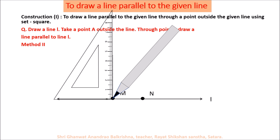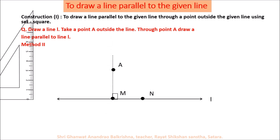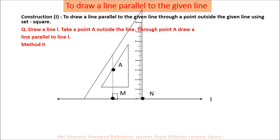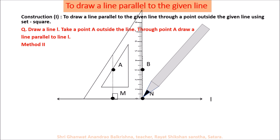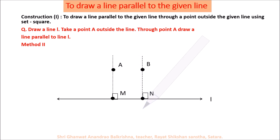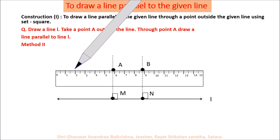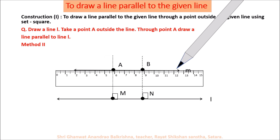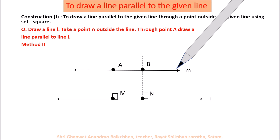We have drawn a perpendicular to line L through point M. Now take any point A on this perpendicular line. Use the set square again and draw a perpendicular to line L through point N. Take point B on this line such that MA is equal to NB. Now use a ruler and draw a line passing through points A and B. Name this line M. We can say that line M passing through point A is parallel to line L.